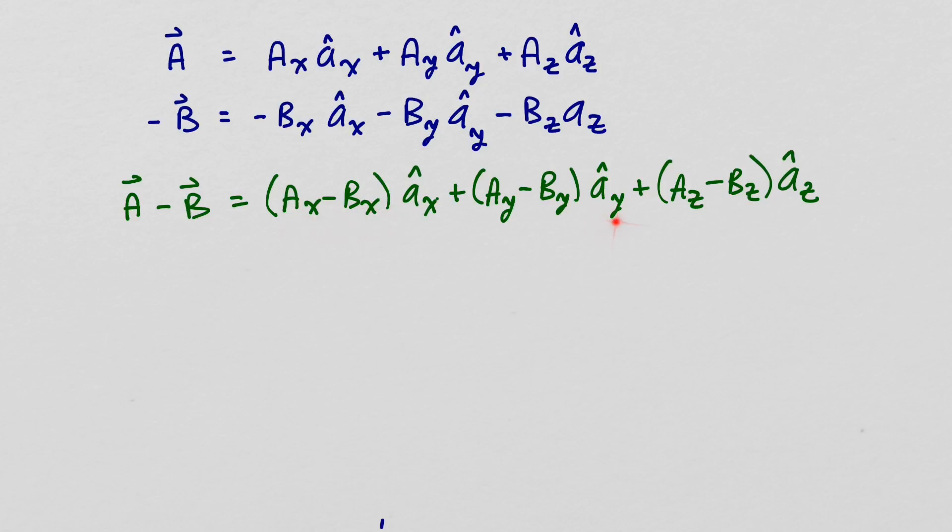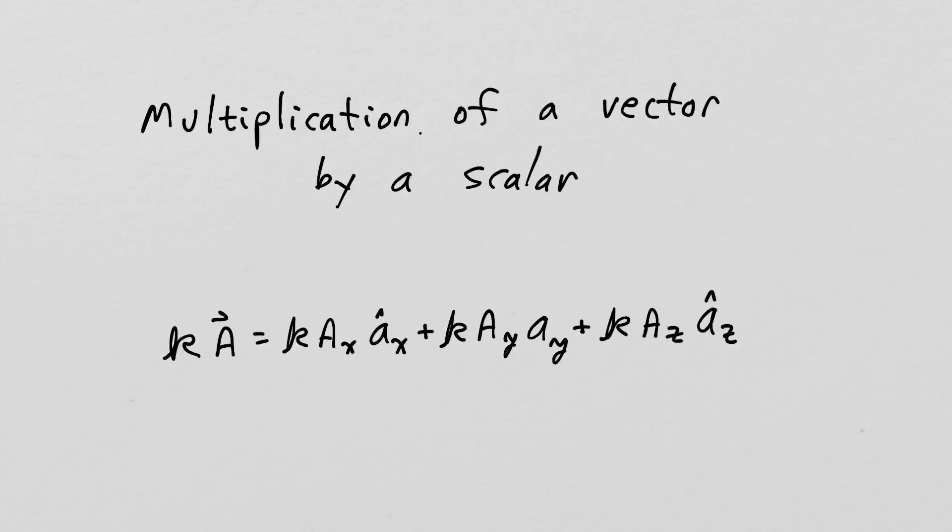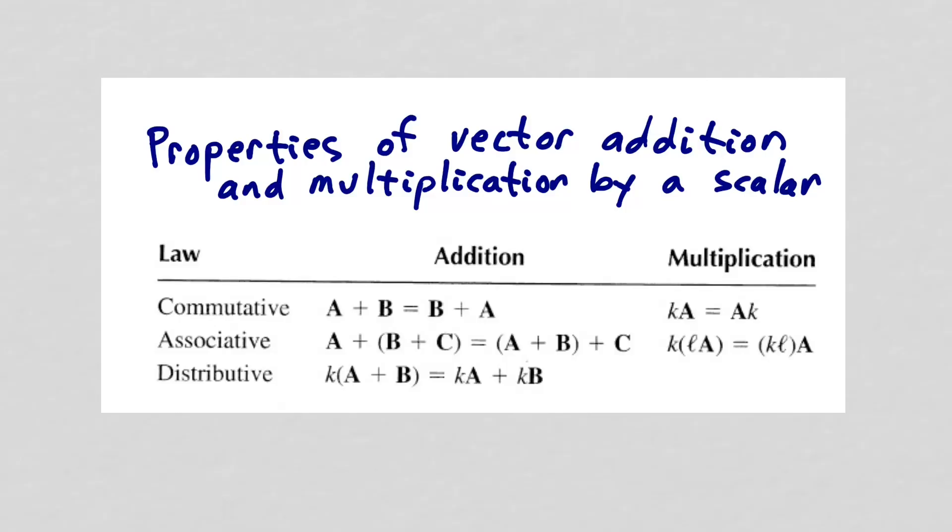When we multiply a vector by a scalar, we will think of that as increasing the magnitude of the vector by that scalar factor. So each component of the vector will be multiplied by the scalar factor K in this case. Here is a table from your textbook showing the properties of vector addition and multiplication by a scalar. You can verify any of these vector identities by writing the vectors in component form and evaluating the two sides of the equations.